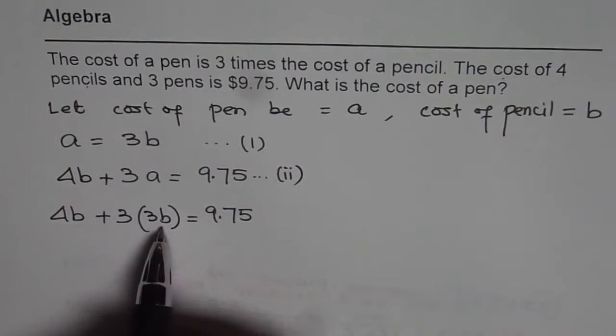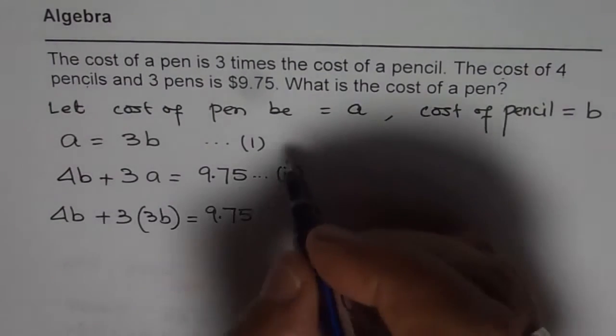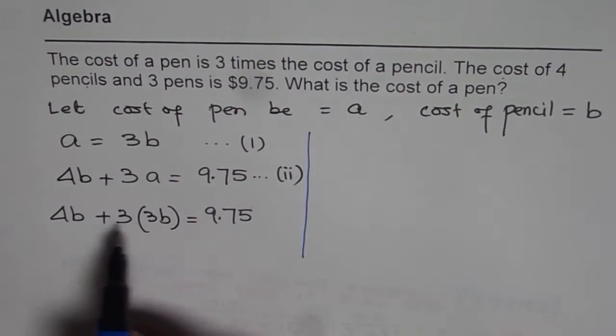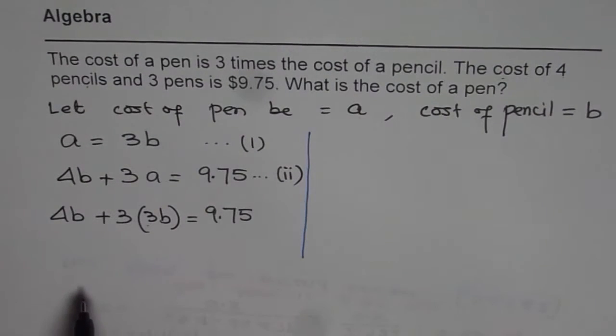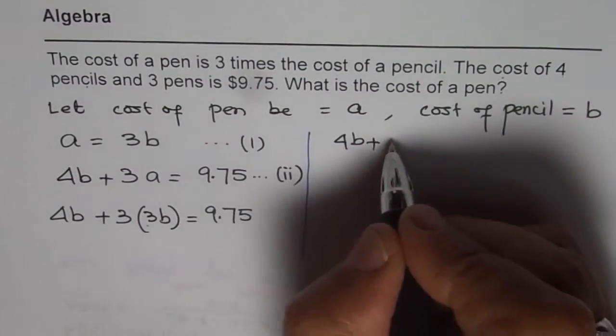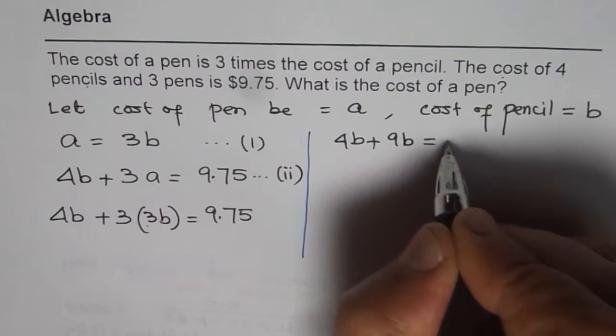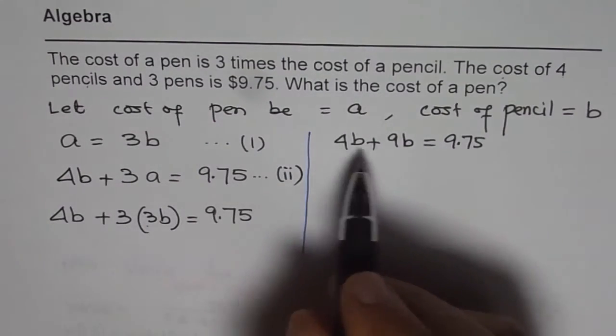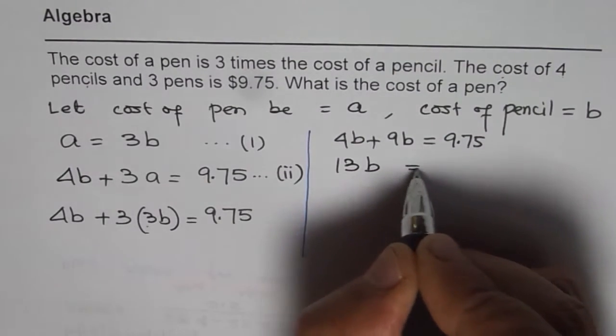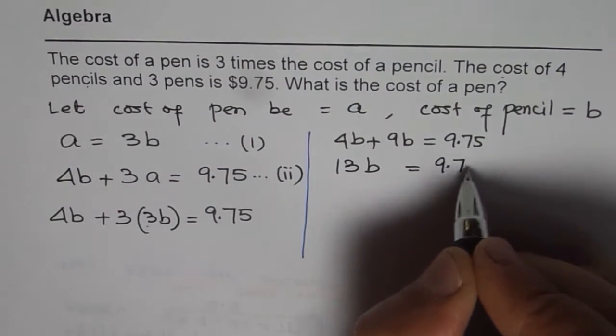Now here we have only one variable. That's the beauty of substitution. Since there is one variable, we can combine and find. So what equation do we have? We have 4B plus three times three is nine, 9B equals to 9.75. 4 plus 9 is 13. So we can write 13B equals to 9.75.